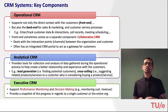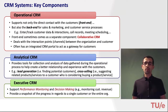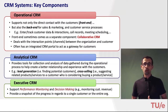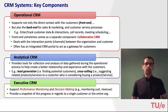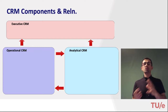The third sub-component is executive CRM, which facilitates performance monitoring and decision making based on operational data. For instance, it can provide a snapshot of revenue progress for a single customer or the entire organization. So the three sub-components are: operational, analytical, and executive. This figure shows the functions and relationships among these three components.